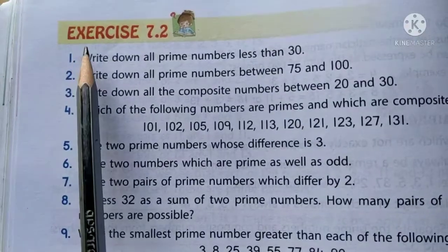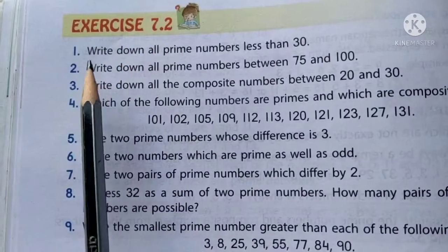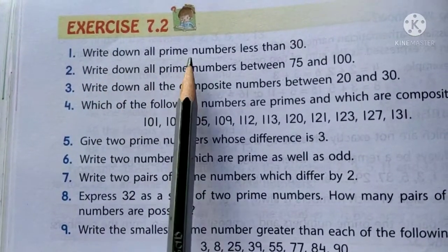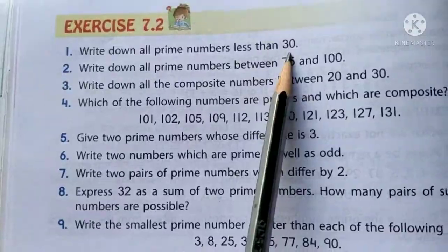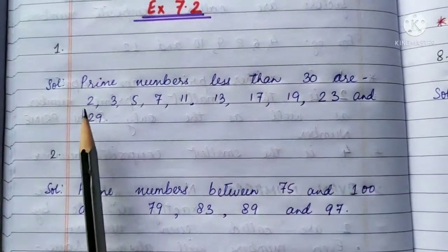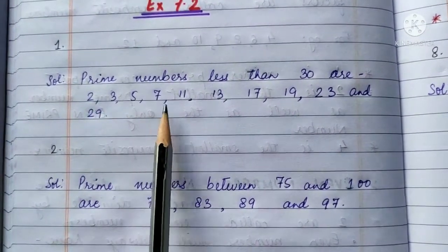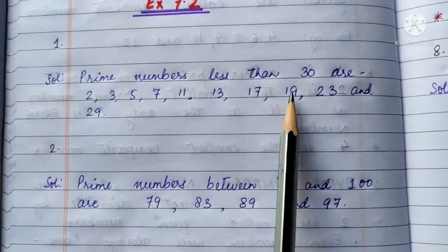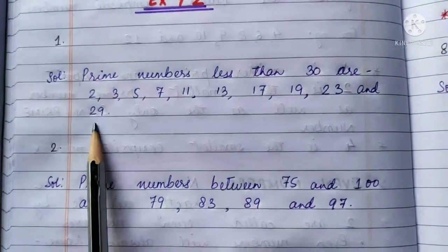Now, let us solve the questions from exercise 7.2. First, write down all the prime numbers less than 30. Prime numbers less than 30 are 2, 3, 5, 7, 11, 13, 17, 19, 23 and 29.